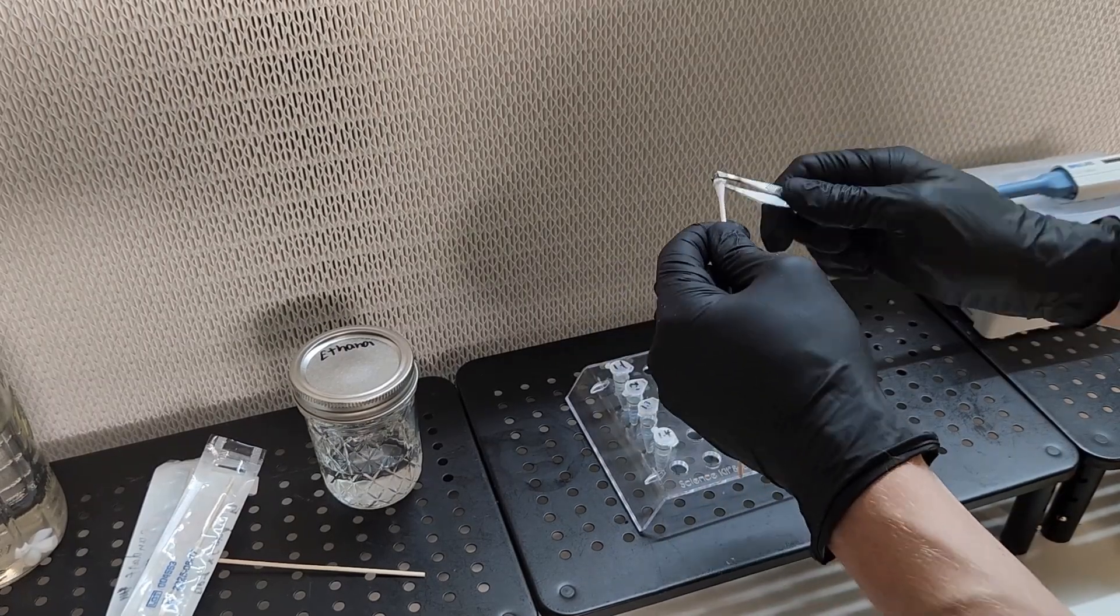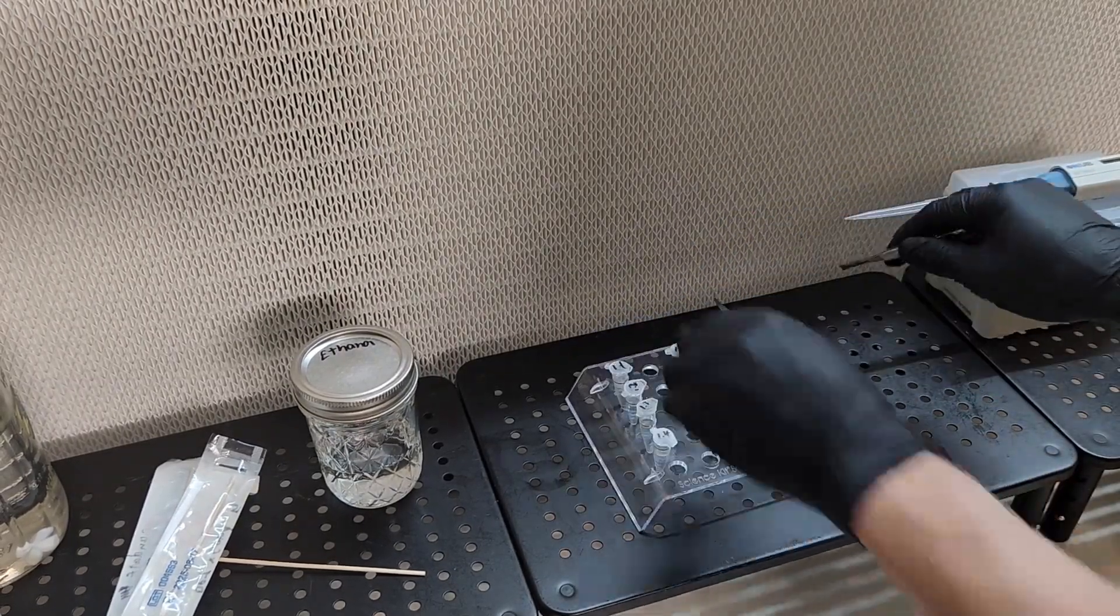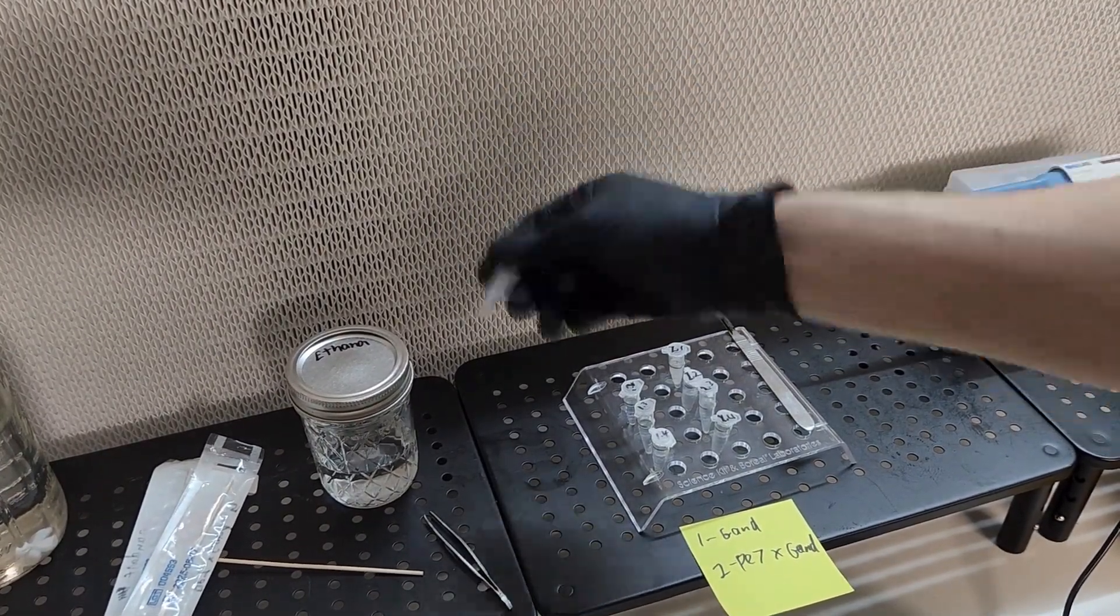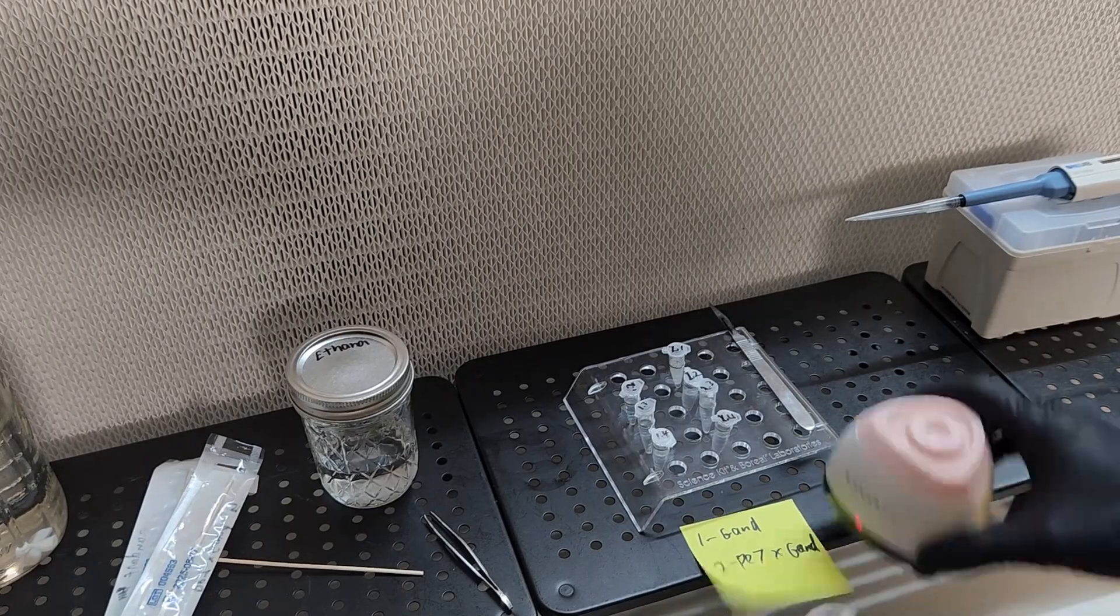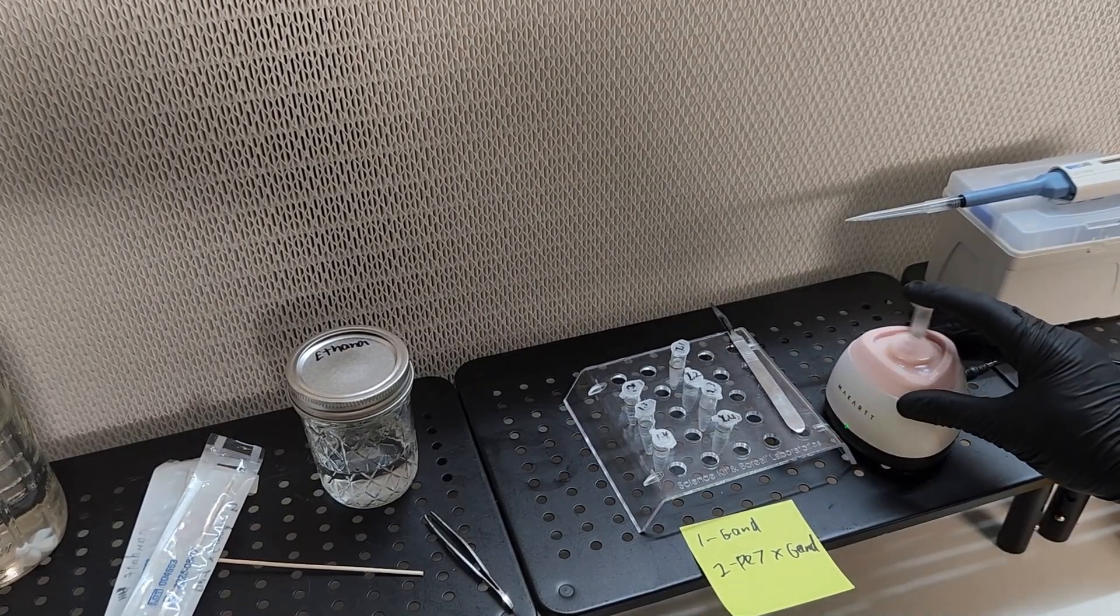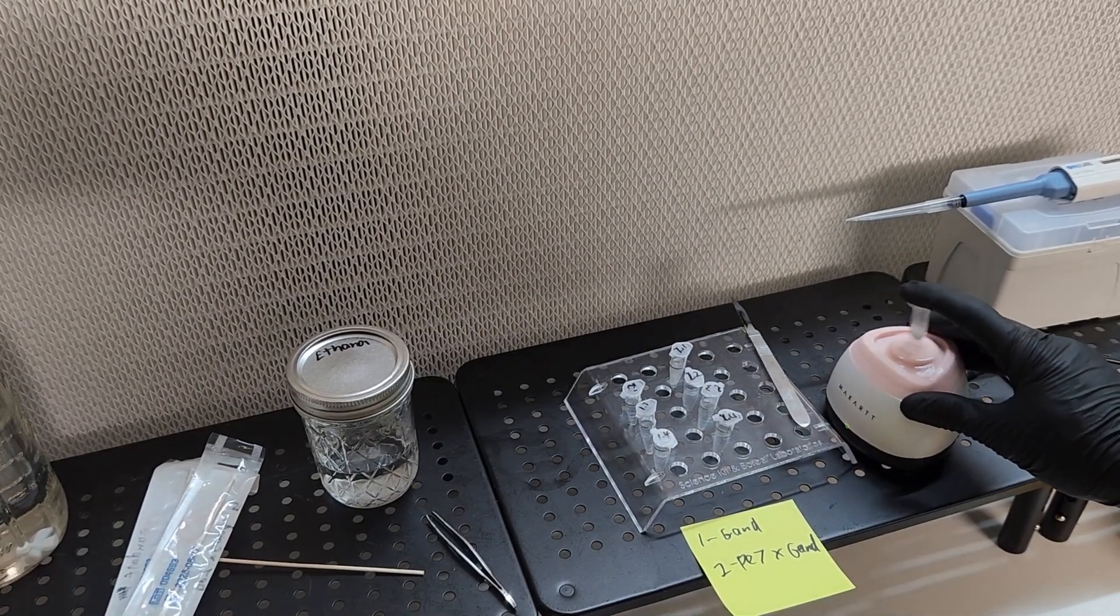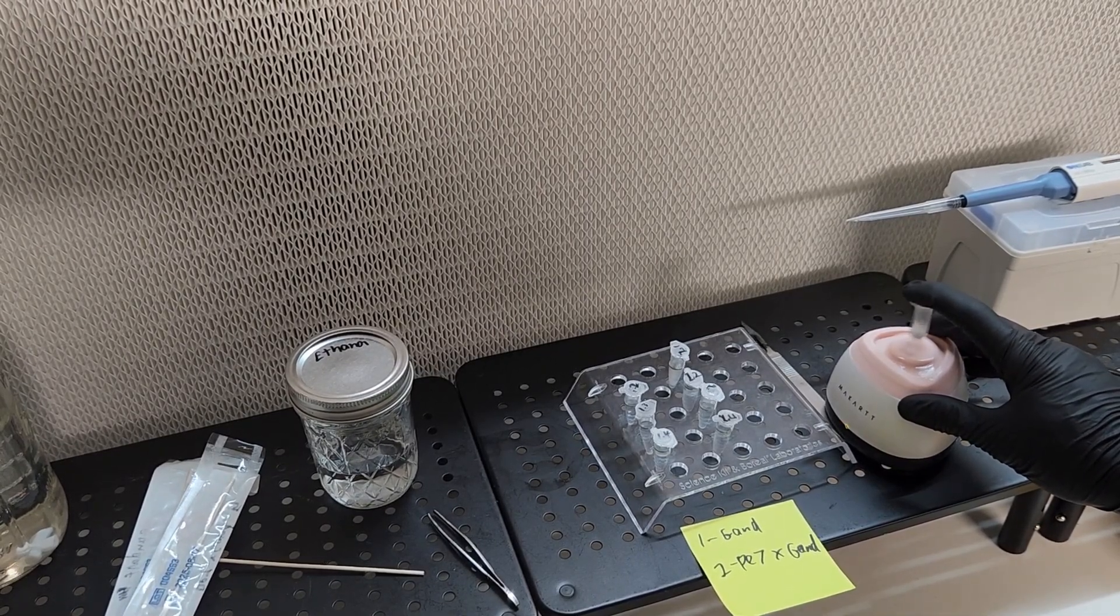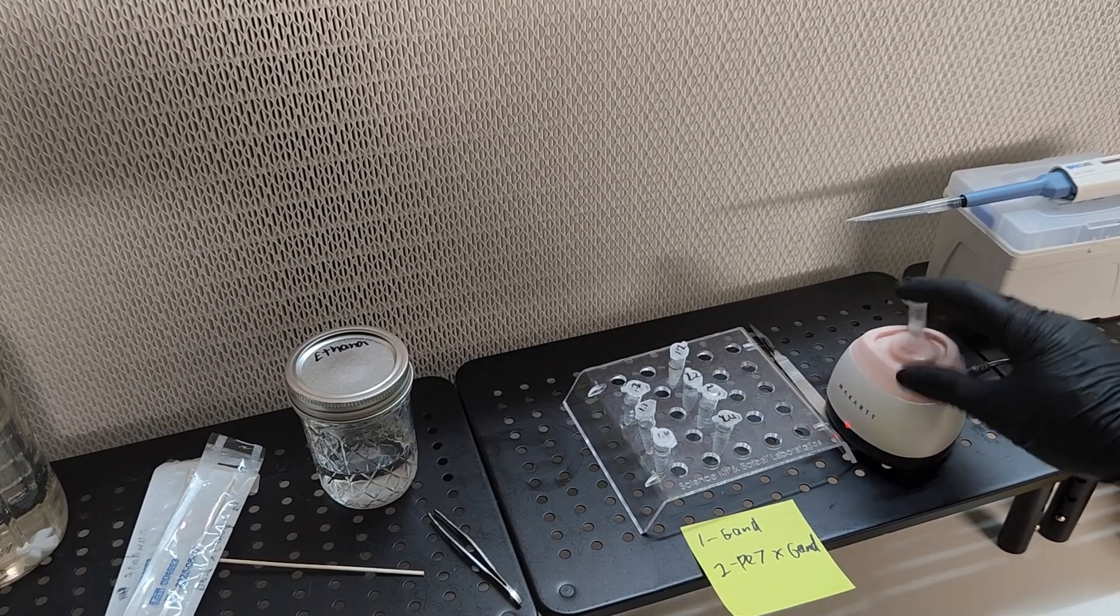Now that you've made your stock spore solution in the first micro centrifuge tube you're going to want to shake it very vigorously and even possibly use something like a vortexer in order to completely homogenize the spores in the tube. The better you mix it the more chance you have of separating all of the spores and ensuring that you do not have clumped spores.